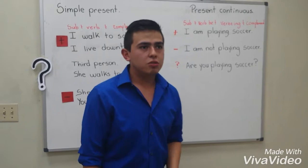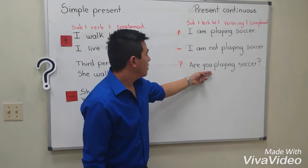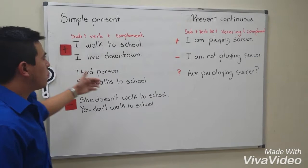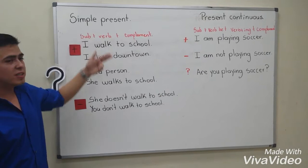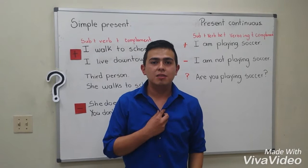For a question in the present continuous, we use verb be, subject, verb plus -ing, and complement. What is the difference between the simple present and present continuous? Don't forget: we use the simple present for things that happen always or usually — I speak English. And we use the present continuous for things happening now — I am speaking English. Thank you so much.